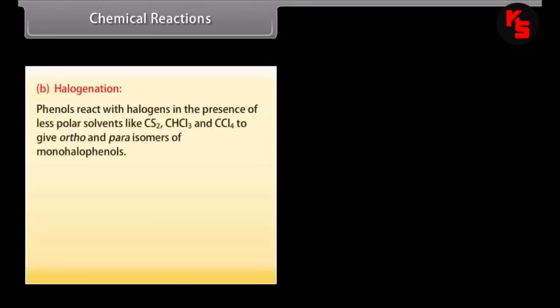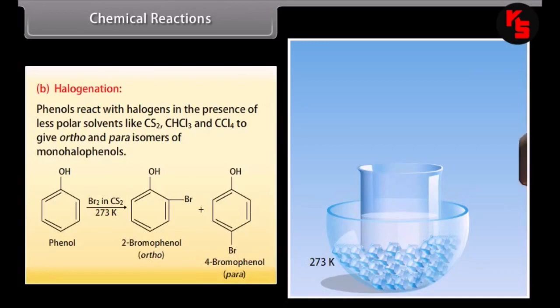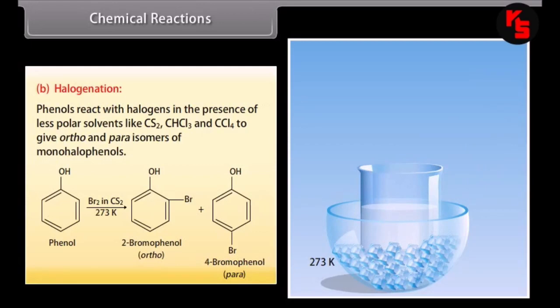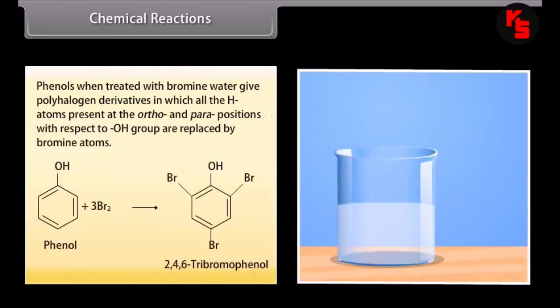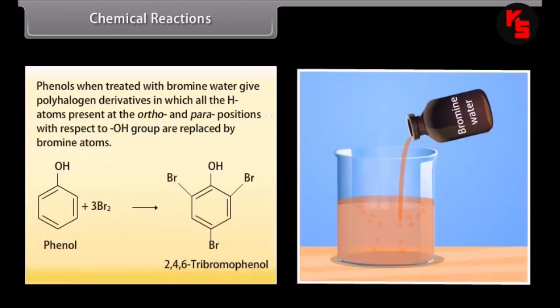Halogenation: phenols react with halogens in the presence of less polar solvents like carbon disulfide, chloroform and carbon tetrachloride to give ortho- and para-isomers of monohalophenols. Bromine in carbon disulfide reacts with phenol to form 2-bromophenol and 4-bromophenol. When treated with bromine water, phenols give polyhalogen derivatives in which all hydrogens at ortho and para positions are replaced by bromine atoms, forming 2,4,6-tribromophenol.